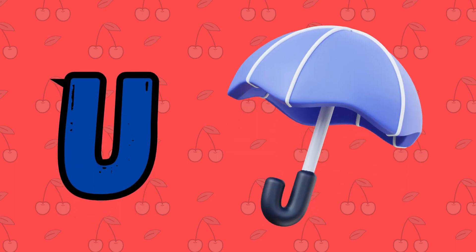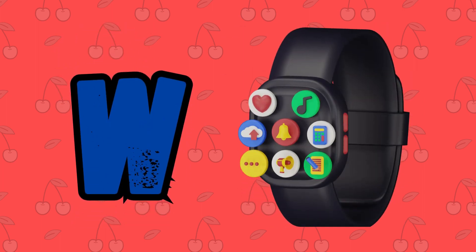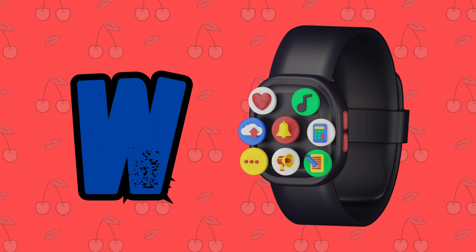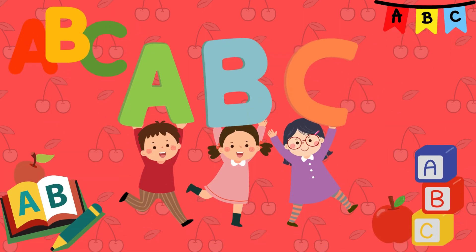U is for umbrella, u-u-umbrella. V is for violin, v-v-violin. W is for watch, w-w-watch. X is for xylophone, x-x-xylophone.